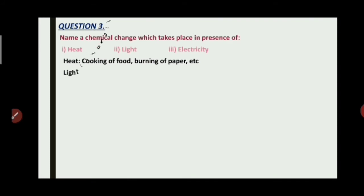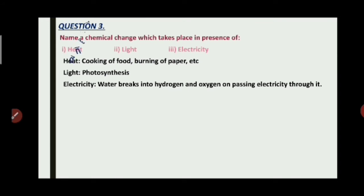In presence of light, we all know photosynthesis, a chemical change, takes place. In presence of electricity, electrolysis of water takes place. In this, water breaks down into hydrogen and oxygen on passing electricity through it.